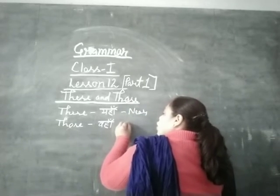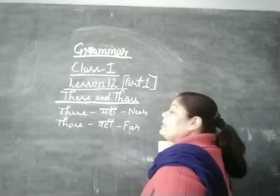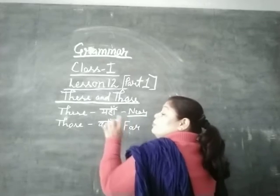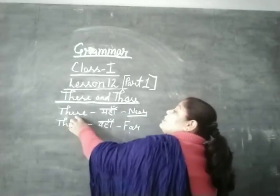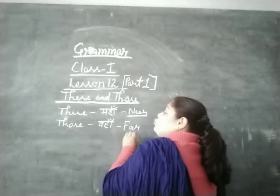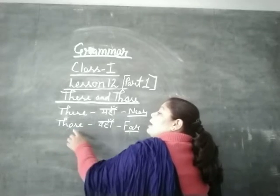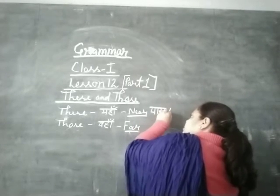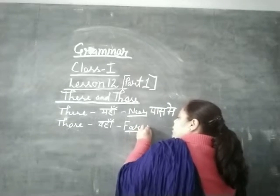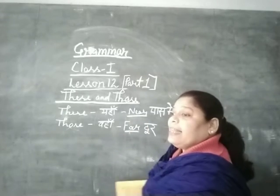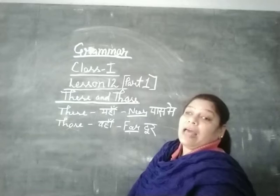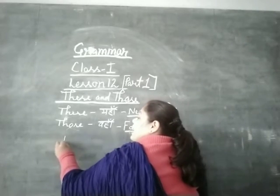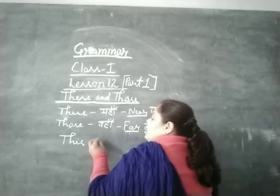Near means pass — close by. When things are near and similar, then we use 'these'. And when things are far and similar, then we use 'those'. For example, if some books or things are near, then we say 'these are books'.